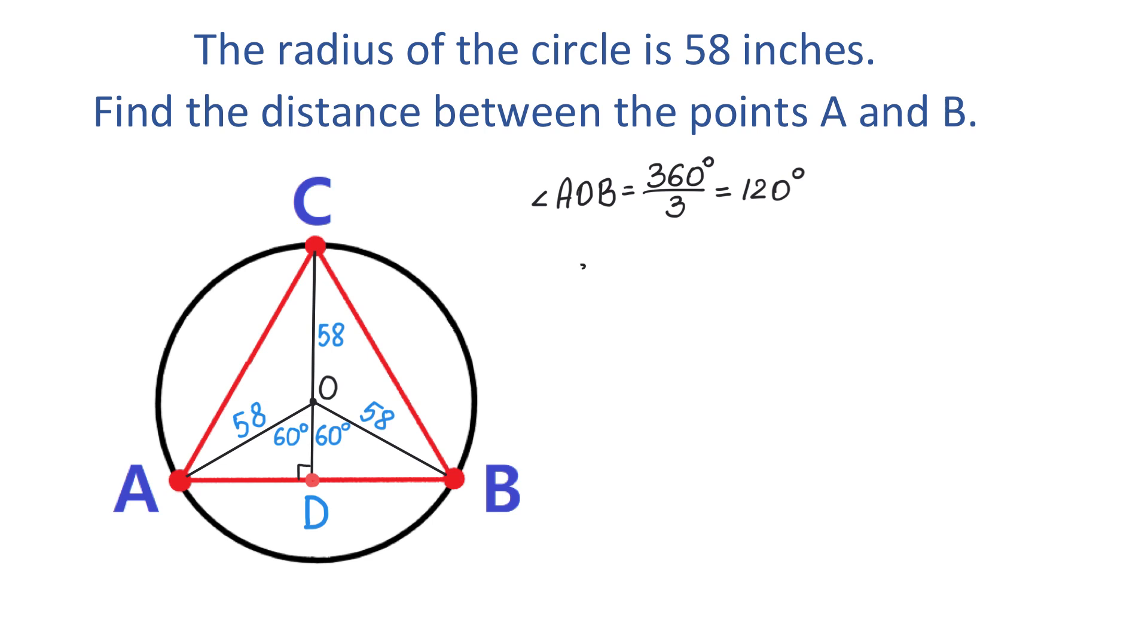So we will write that sine of 60 degrees equals the opposite side AD divided by hypotenuse 58. To solve for AD, we will multiply both sides by 58. Then on the right side, 58 will cancel and AD equals 58 multiplied by sine of 60 degrees.